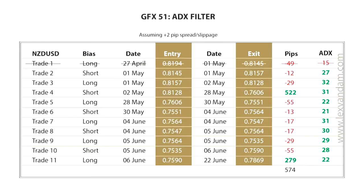Moving average strategies are unlikely to work well when the market is ranging and moving sideways. Therefore, it might be a good idea to use other indicators to filter out low-probability signals. One such filter is the ADX indicator. The ADX is a measure of trend strength, and a value below 20 indicates that the market is ranging. We can add the ADX indicator to stop us trading our moving average strategy, which is a trend-following strategy, when there is no trend, i.e., when the ADX is below 20.